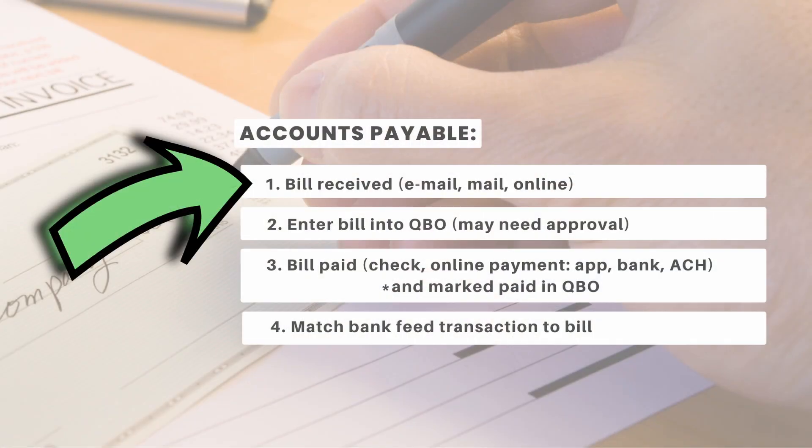Step one of this four-part process is that the bill is received by the client and you somehow need to get access to it. With each step there are a lot of different ways you can set it up with your client. Bills and invoices can come to you in a variety of ways — they could be paper and come in the mail, they could be emailed, or maybe you have to go to an online website and search them out, plus other options depending on your client. First, you'll need to decide if you want a more paper-based system or a more digital-based system.